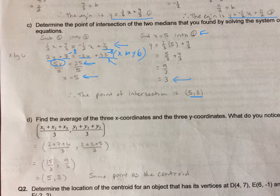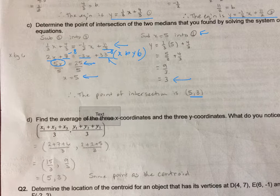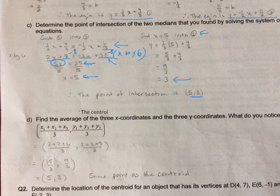So my centroid, my point of intersection, is at 5, 3. So therefore the centroid, that center of mass, is at bracket 5 comma 3.